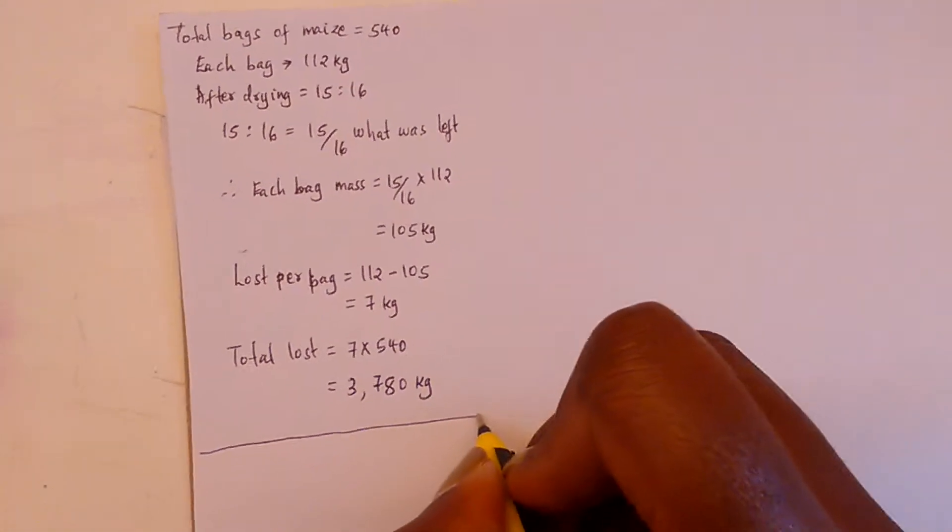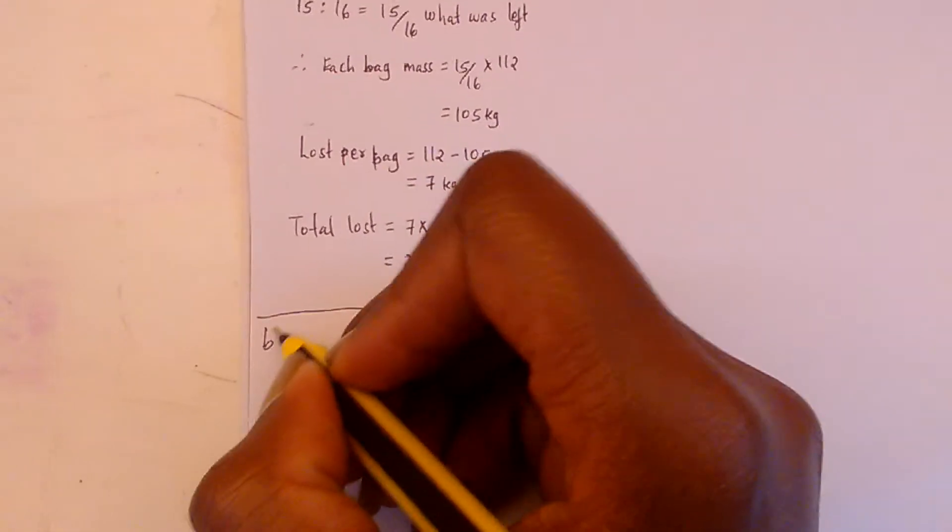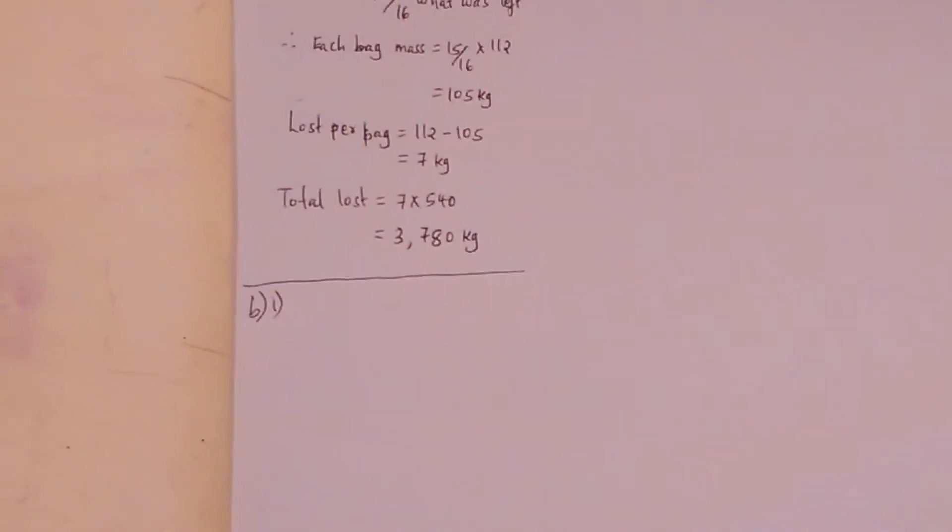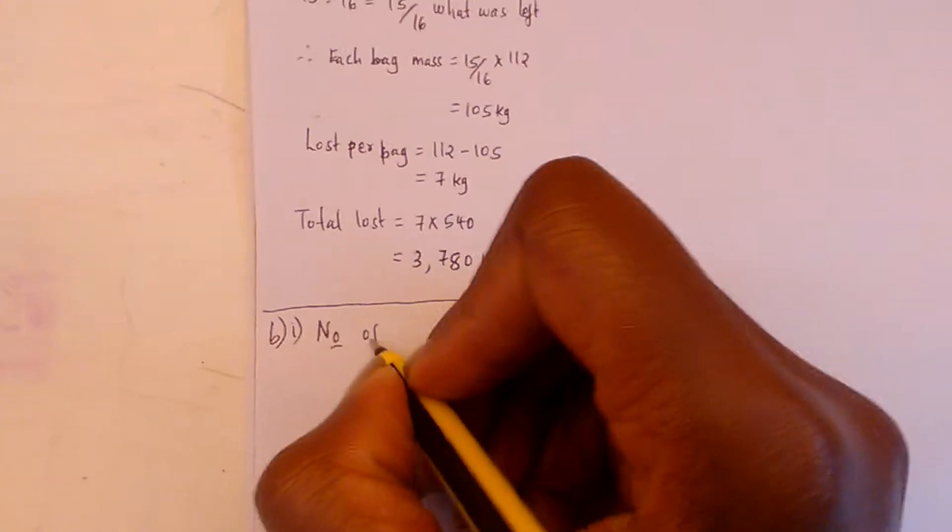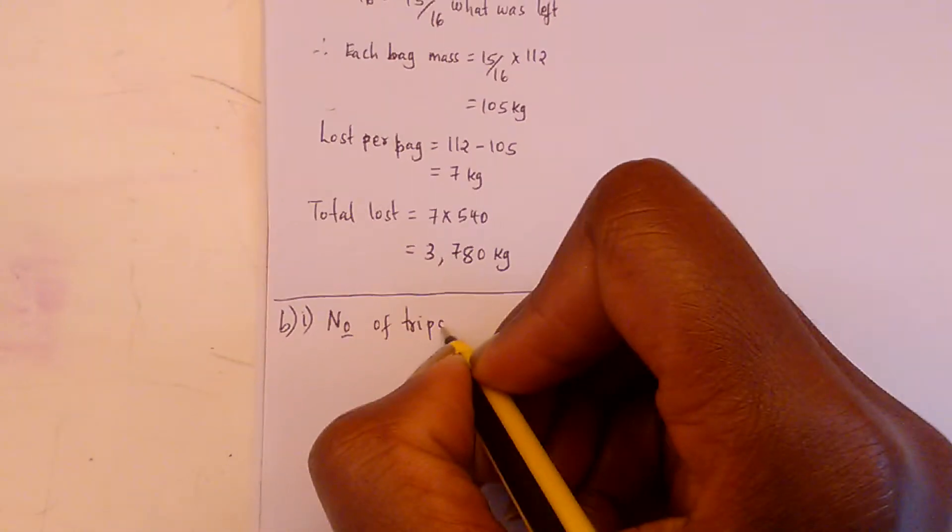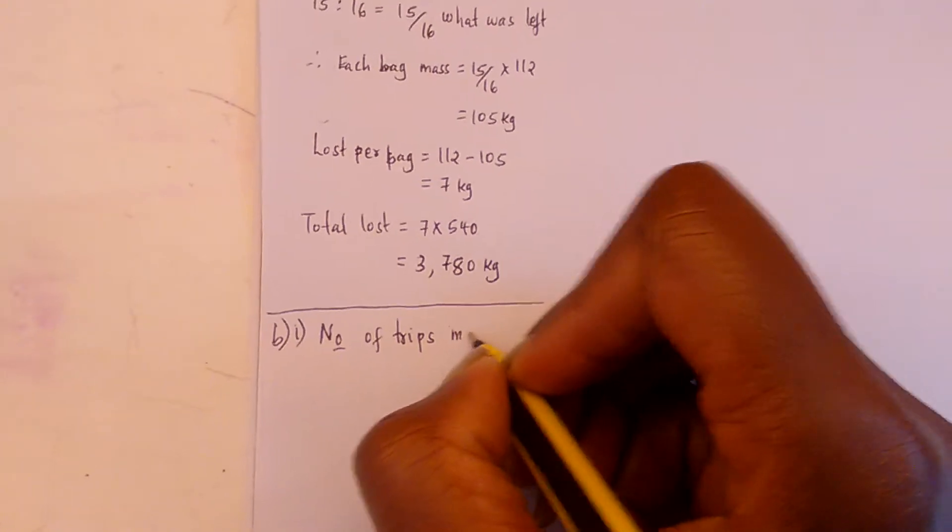We've completed Part A. So Part B asks us to find the number of trips made.